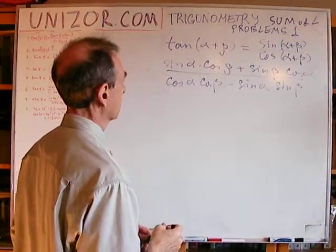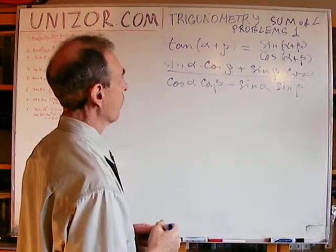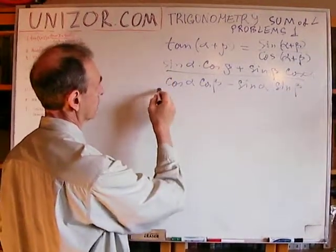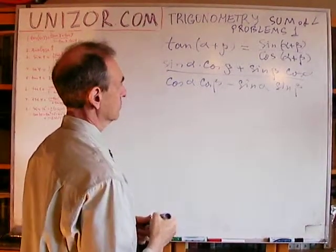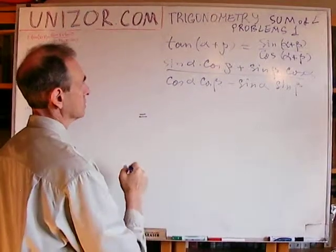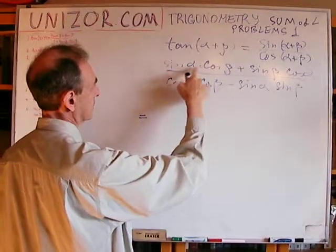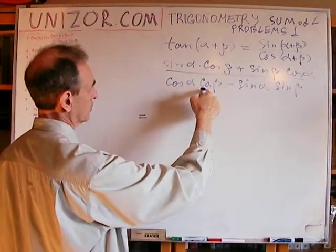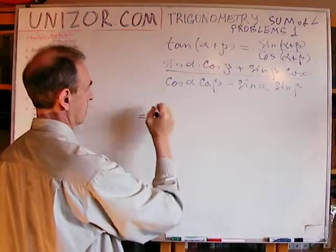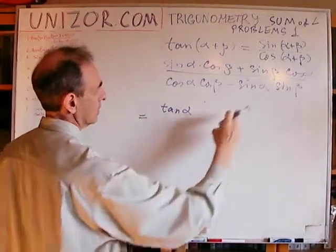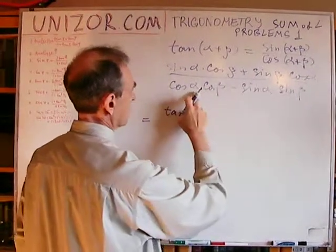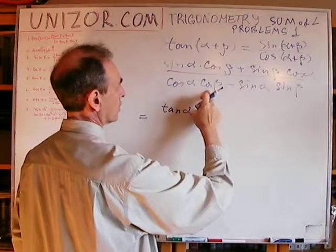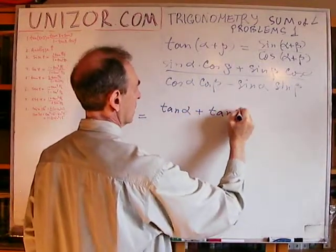What we have to do here is transform it into tangents of the individual angles. Let's divide the numerator and denominator by cosine alpha cosine beta. If I divide sine alpha cosine beta by cosine alpha cosine beta, the cosines reduce and sine over cosine remains, which is by definition tangent of alpha. Similarly, dividing the other term gives sine beta over cosine beta, which is tangent of beta.